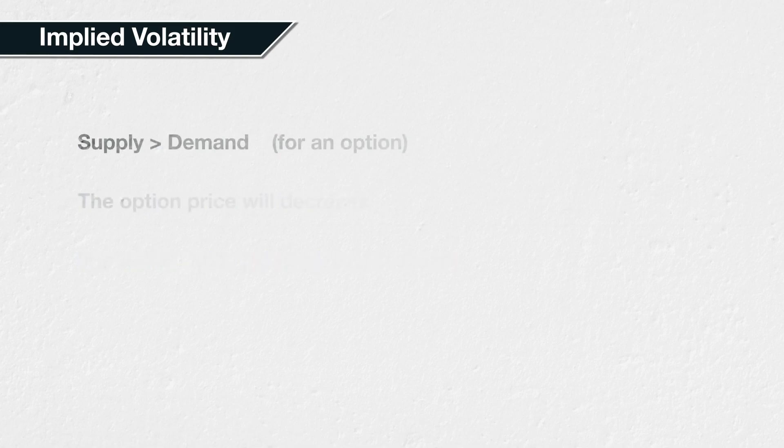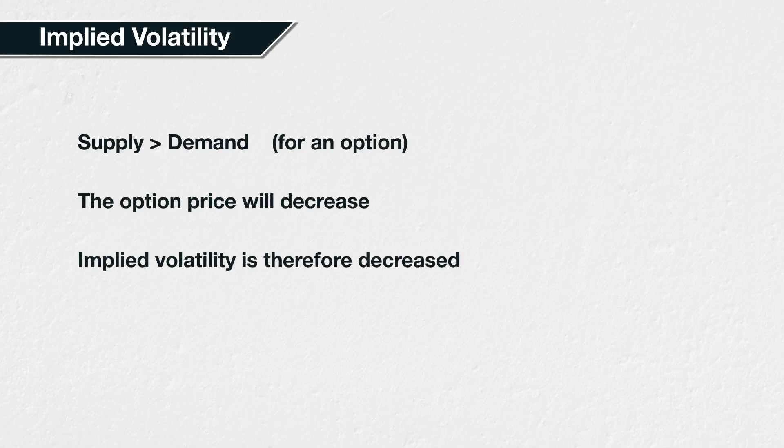If supply outweighs demand, the price of an option will be driven down, also decreasing the implied volatility. A lower option price will bring the breakeven price of the option closer to the money, meaning price does not have to move as far for the option buyer to make a profit. This implies that a smaller move is expected in the underlying price, and so it implies a lower volatility in the underlying price.